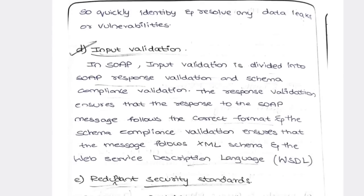Next is input validation. Whatever you are searching in your organization via the SOAP protocol, it cross-checks whether your input is correct or not. For example, if you download a harmful file, Chrome will give a hint that it is harmful. If your bank receives an unusual transaction request, it will give a hint: 'This is an international transaction, not an authorized transaction.' That is input validation — a best method.